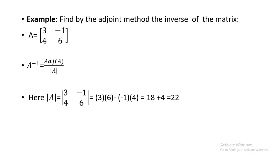First, we need to find out the determinant. If the determinant is 0, we don't need to calculate the adjoint or find the inverse. The determinant is calculated by cross-multiplying: 3 multiplied by 6, minus minus 1 multiplied by 4. So 3 times 6 is 18, and minus times minus gives us plus, so 1 times 4 is 4. Therefore 18 plus 4 equals 22. Since it is a non-singular matrix, we can proceed to find the inverse.